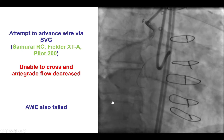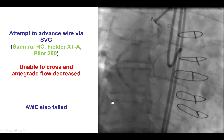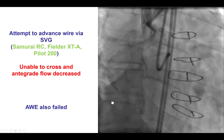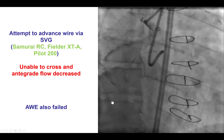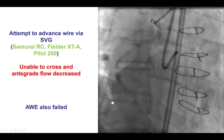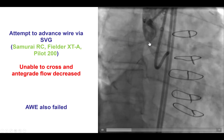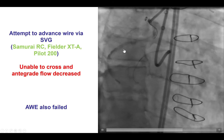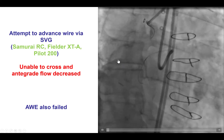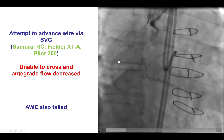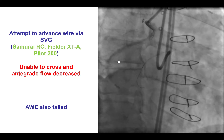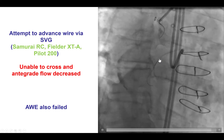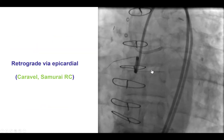We attempted to advance a wire through the degenerated saphenous vein graft. However, despite trying multiple wires both with and without a microcatheter, we were actually unable to cross through this high-grade saphenous vein graft lesion. We also had significant reduction in antegrade flow through the saphenous vein graft, and that is why we changed our crossing attempts, going with antegrade wire escalation.